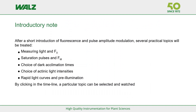After a short introduction, the following topics will be discussed: different aspects related to measuring light and F0; saturation pulses and Fm; choice of dark acclimation times; choice of actinic light intensities; and finally, rapid light curves and pre-illumination. By clicking in the timeline, it is possible to select a topic of interest.